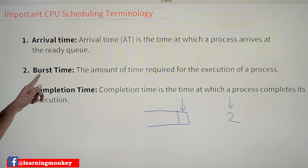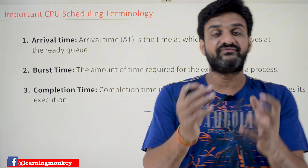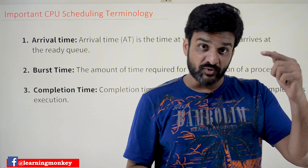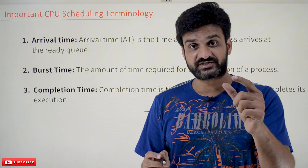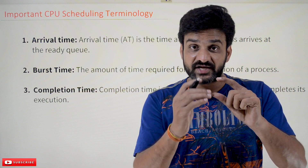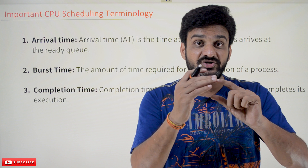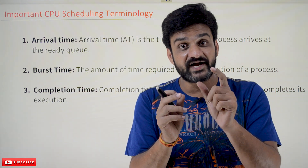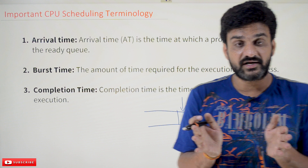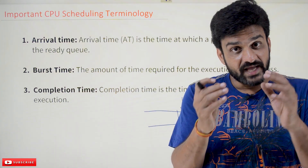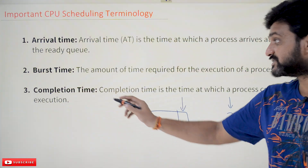The next term is burst time. Burst time is the amount of time required for the execution of a process. If a process is given to the CPU, without any interrupts or disturbances, the amount of time taken by that process to complete its execution is what we call burst time. For example, a burst time of eight seconds means the process takes eight seconds to complete its execution uninterrupted.